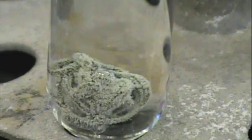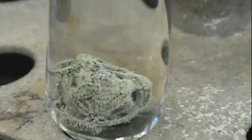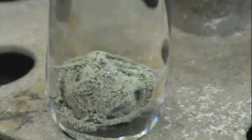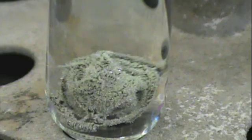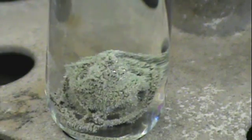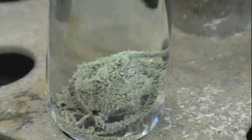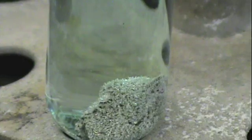You can also see, if you look closely, some streaks in the solution. That is the result of copper ions going into solution, as silver is deposited. Clearly, there is a reaction happening between copper and silver nitrate.